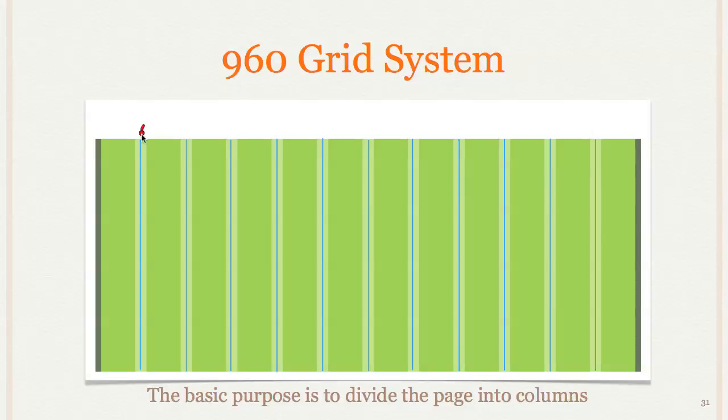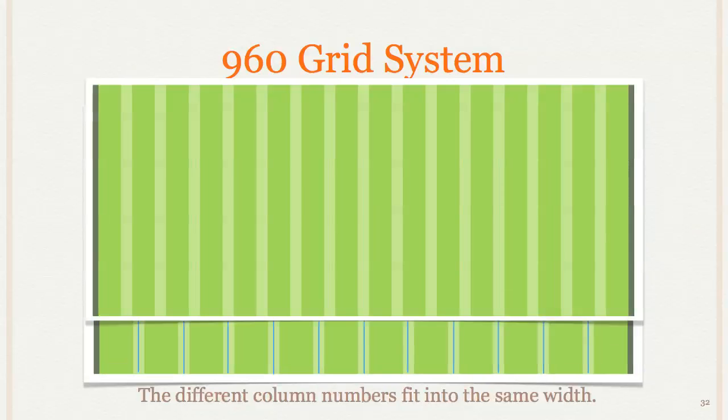And here I've just added these little lines here as well that we'll see later, and it has to do with how the 960 grid system adds the columns in. And there's different column numbers, but they fit into the same width.